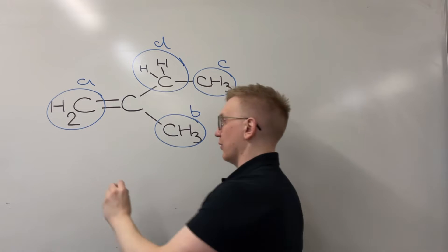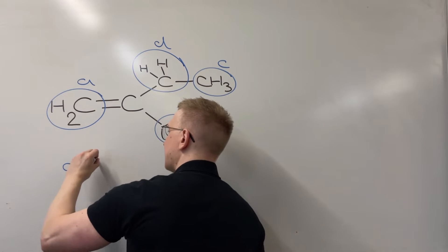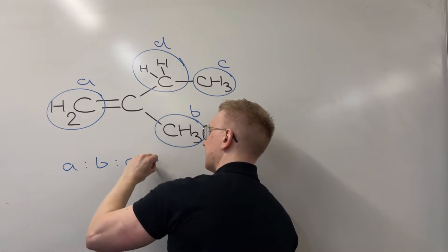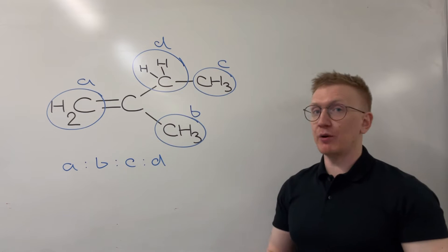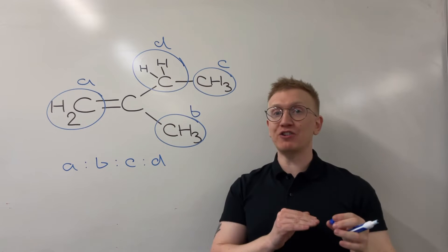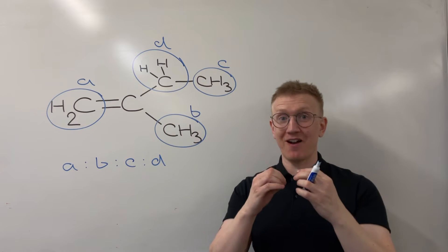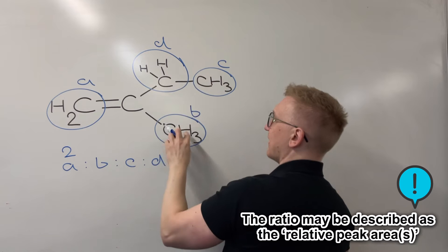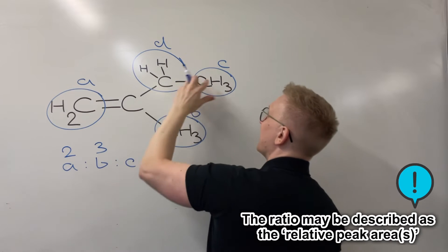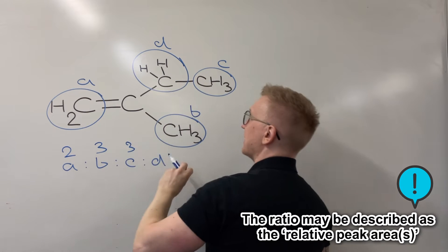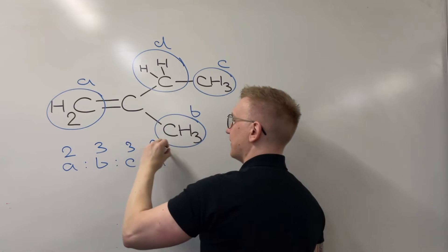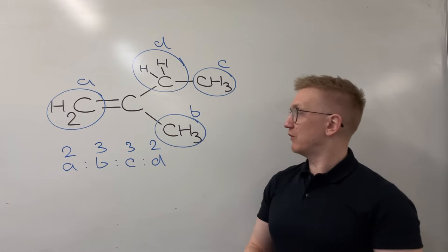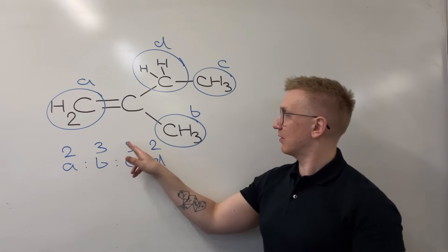Now, what about ratios? Well, my peaks of A to B to C to D are going to be in ratios to each other, depending on how many hydrogens there are within the environment. So A is going to have two. B is going to be three. C is going to be three as well. And D is going to be two. So the ratio of the individual peaks to each other is two to three to three to two.